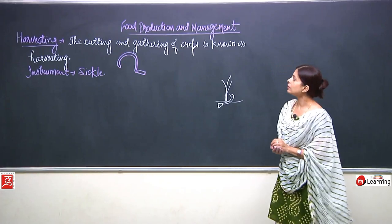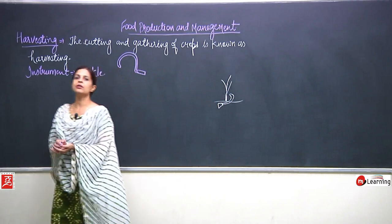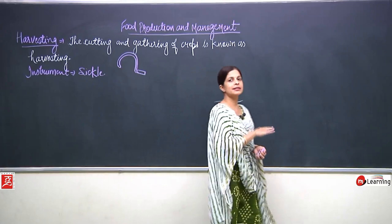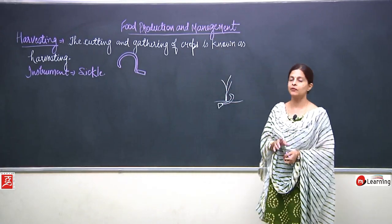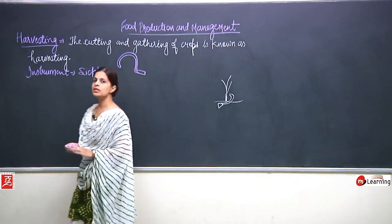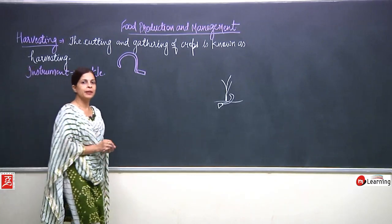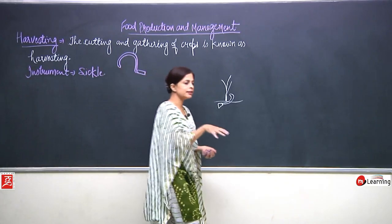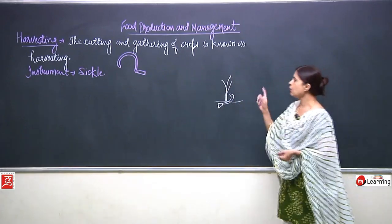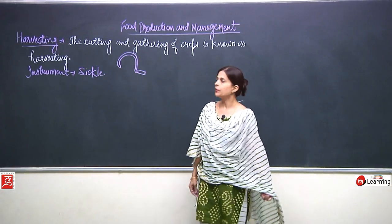So this is what cutting means. Gathering means it is not that just some part of the field is cut — the total field is cut. When I talk about a particular crop grown in a particular field, the whole crop is cut and then the whole crop is gathered and collected in a particular area. This can be done with the instrument known as the sickle.